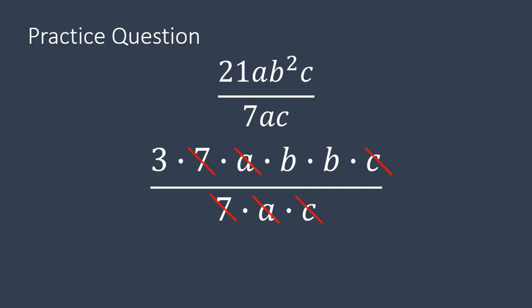When I cancel out those factors that are the same on the top and bottom, I'm left with 3 times b times b, or in other words, 3b squared. Is that the answer that you got? If so, very nicely done.